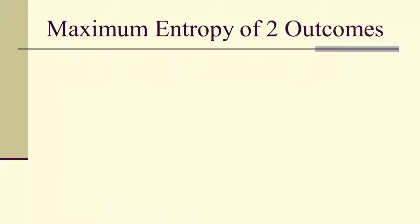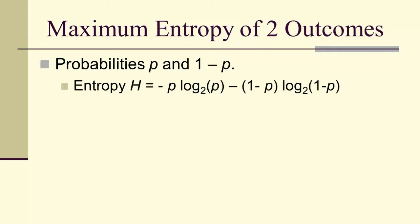So let's look at an example. If we've got two outcomes, then the probability of one outcome will be p and the probability of the other will be 1 minus p. The entropy would be -p log_2(p) - (1-p) log_2(1-p).